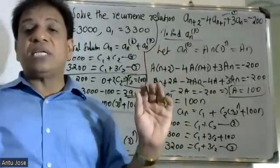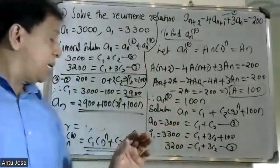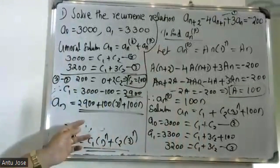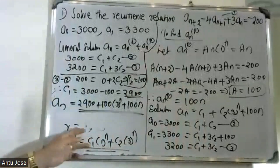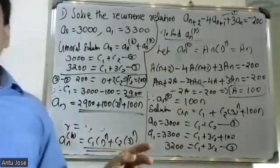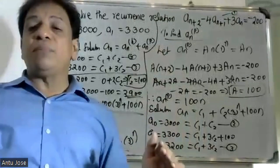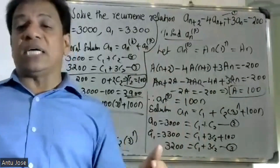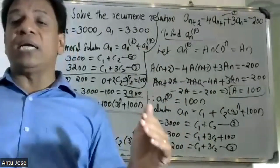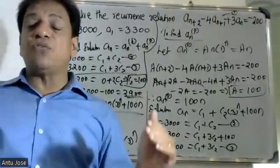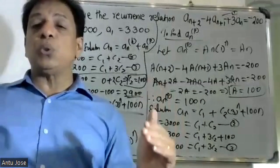The characteristic roots are r equals 1 and r equals 3. The roots are real and distinct, therefore we can write the homogeneous solution as C1 into 1 raised to n plus C2 into 3 raised to n.